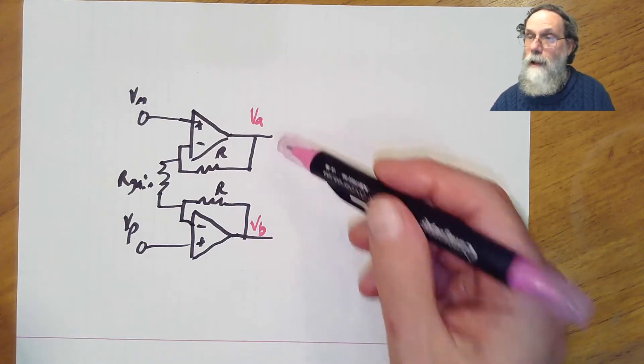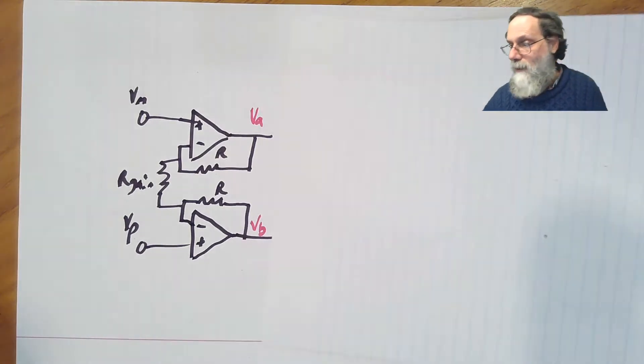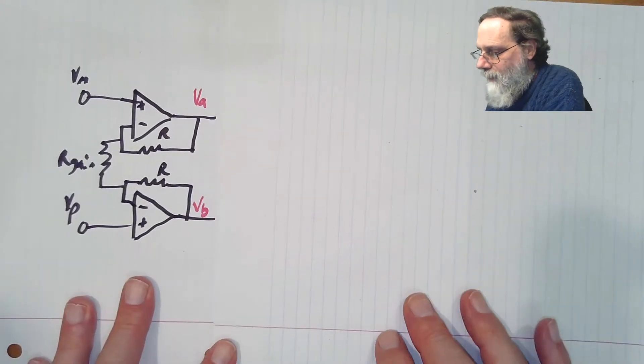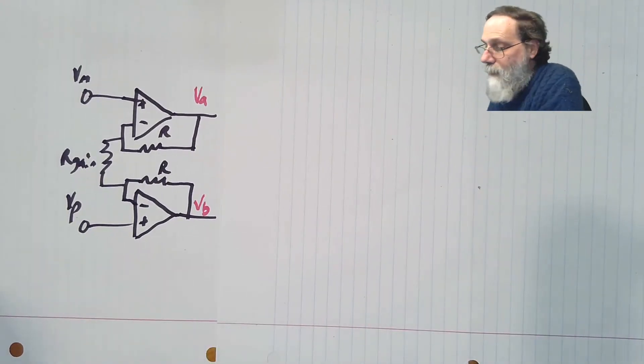We want to get rid of the common mode signal and amplify just the differential signal. So the output here is also going to be a differential signal. We're going to be interested in Vb minus Va. And it'll also have a common mode, Vb plus Va over two. And so our first task is going to be to figure out what are those signals. What is Va? What's Vb? What's the sum? What's the common mode? What's the difference? Let's figure out how we can figure out what this is.